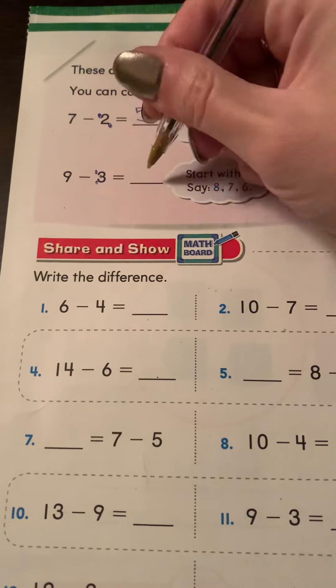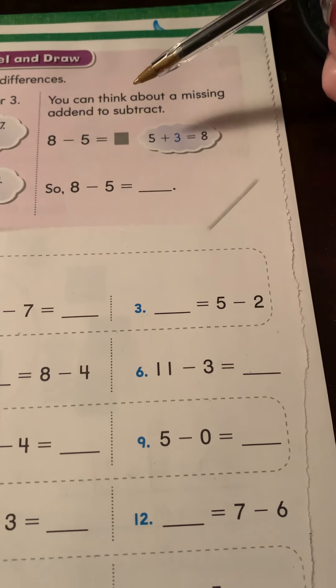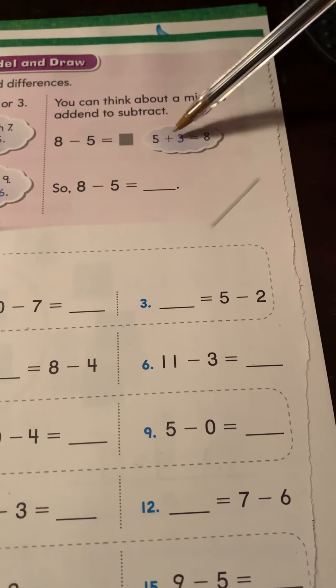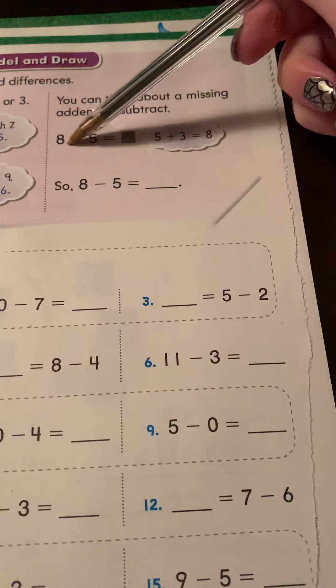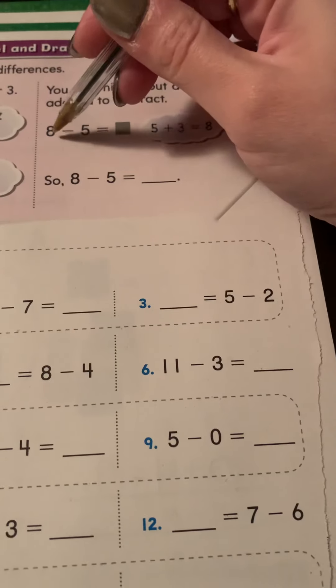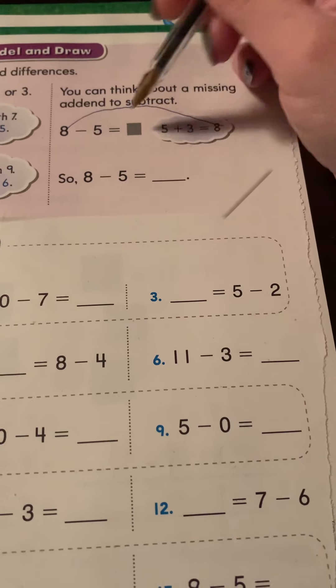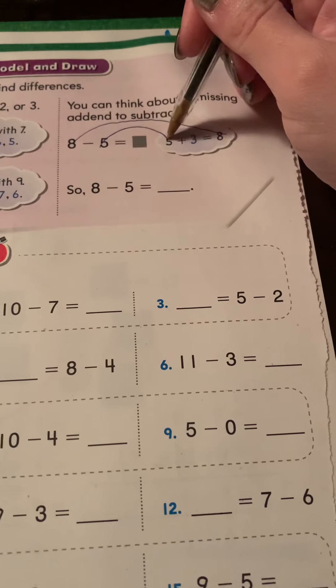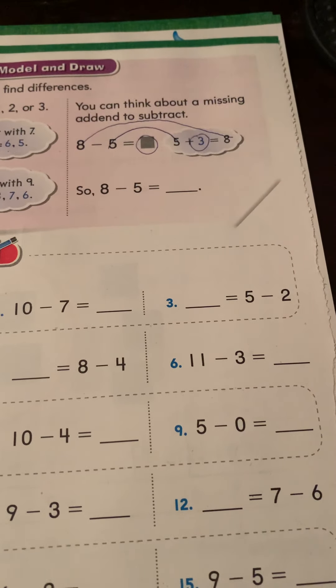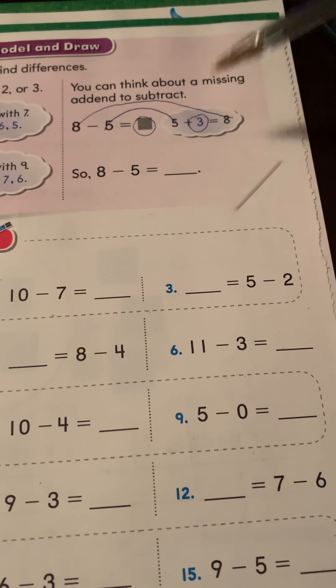On this side, they're showing you that you can think about it as the missing add-on. So if you knew in your head, if you knew that five plus three is eight, if you knew that fact and you saw eight minus five, you might be able to know that the eight is here, the five is here, and the missing number that we don't have yet is three.